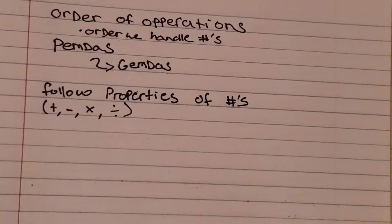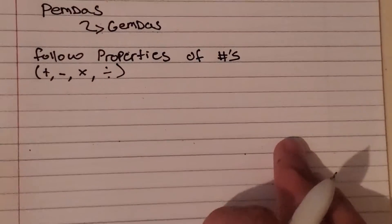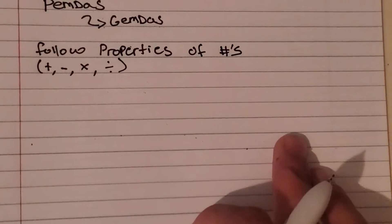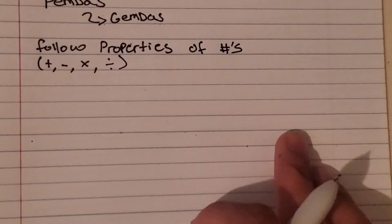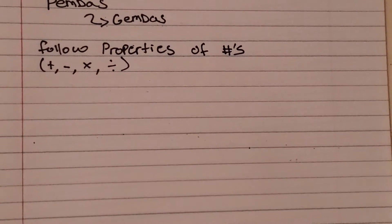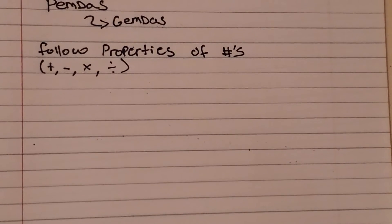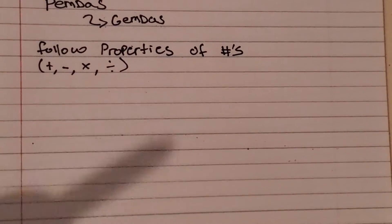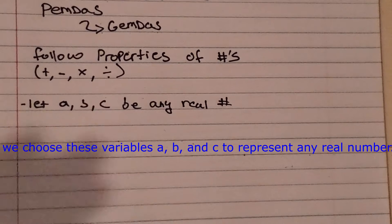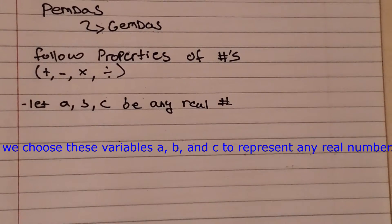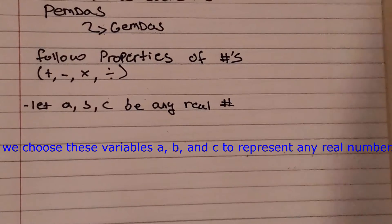So let's talk about these properties. I'm going to list them off for time's sake, because it would take a long time if I were to give an example for each one. If you guys would like me to do examples for each of these, let me know in the comments below and I'll gladly make another video on it. We're going to use three variables as we list these out. So let's talk about the first operation: addition.